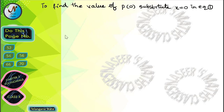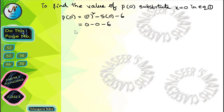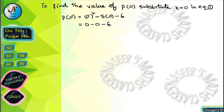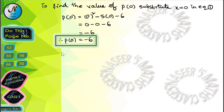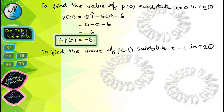To find the value of p(0), substitute x is equal to 0 in equation 1. Then we can write p(0) is equal to 0 square minus 5 into 0 minus 6. Here, 0 square is 0 and 5 into 0 is 0, so after simplification we get minus 6. Therefore, p(0) is equal to minus 6.